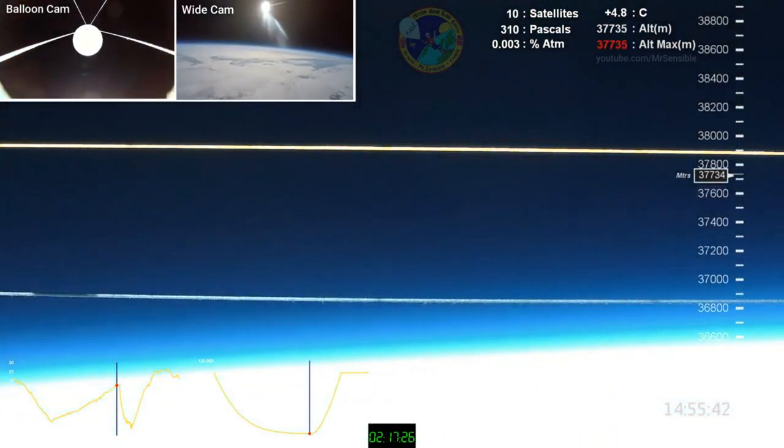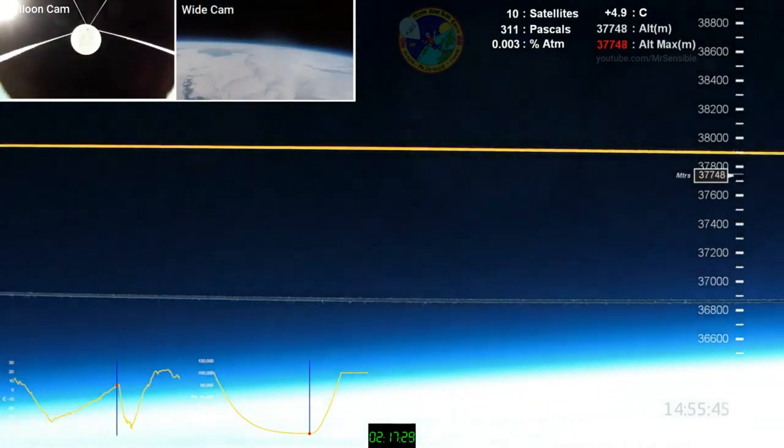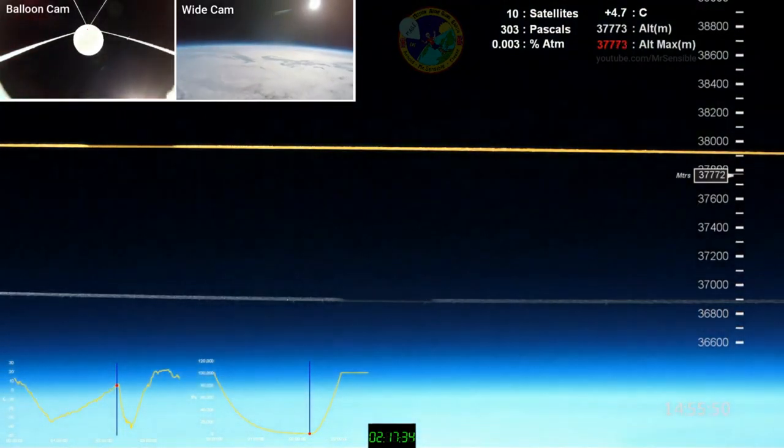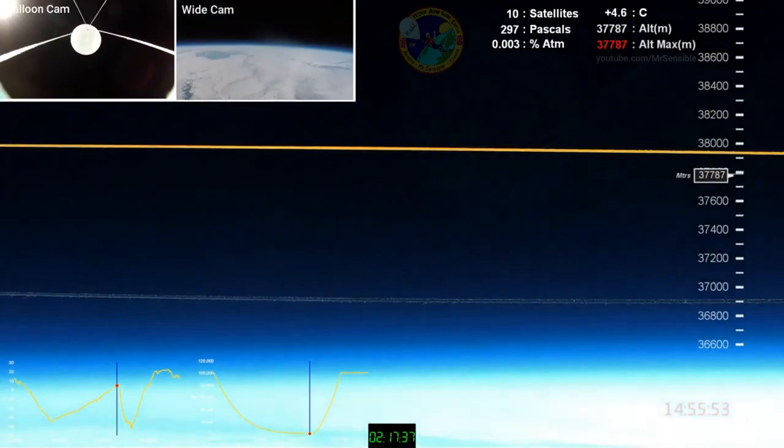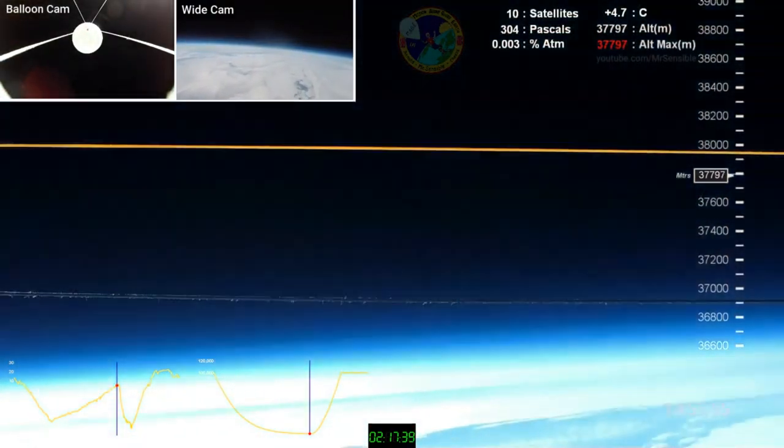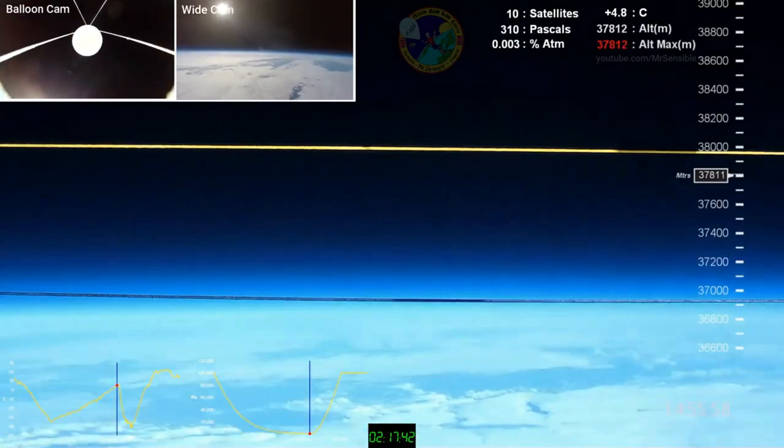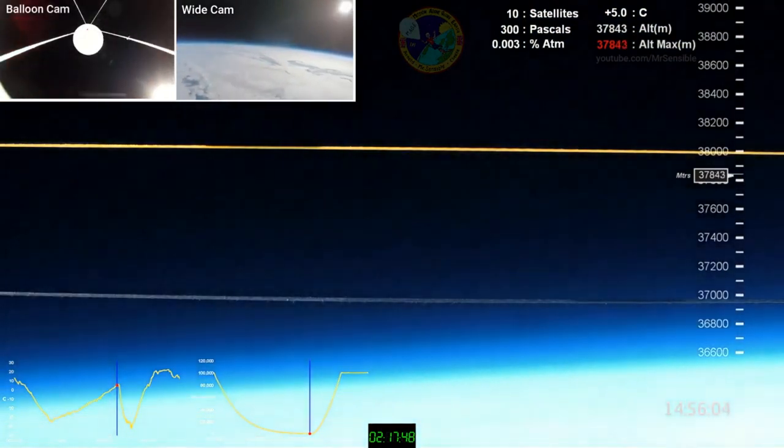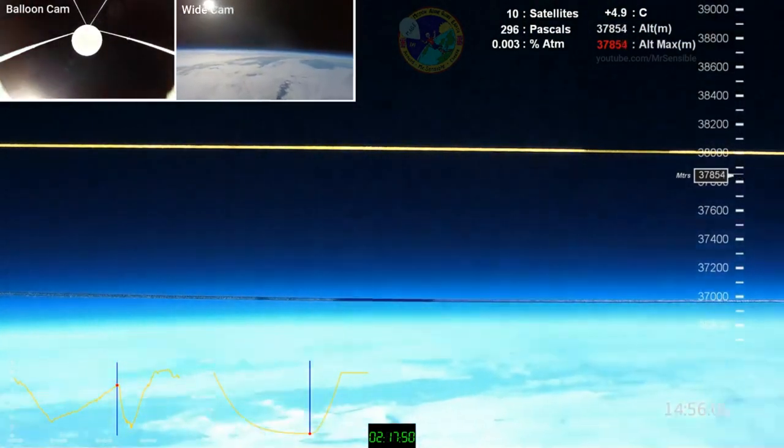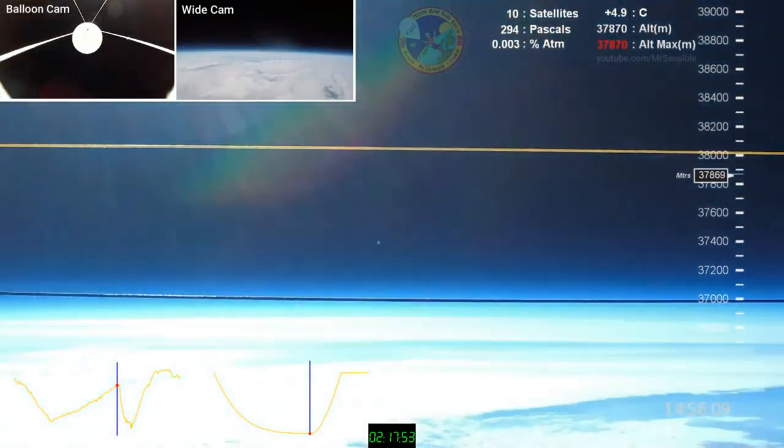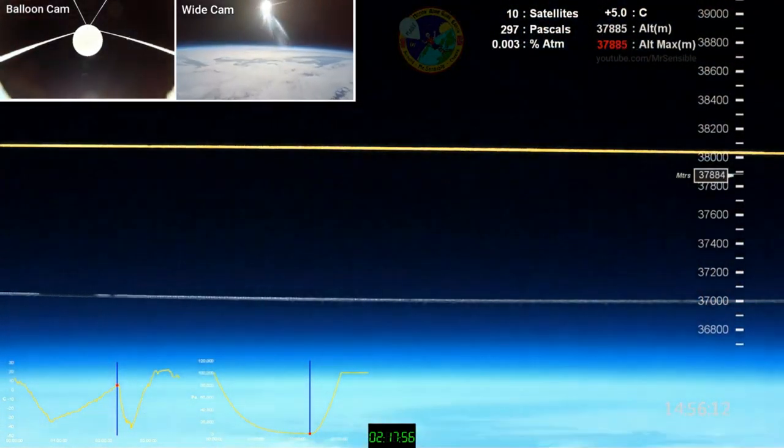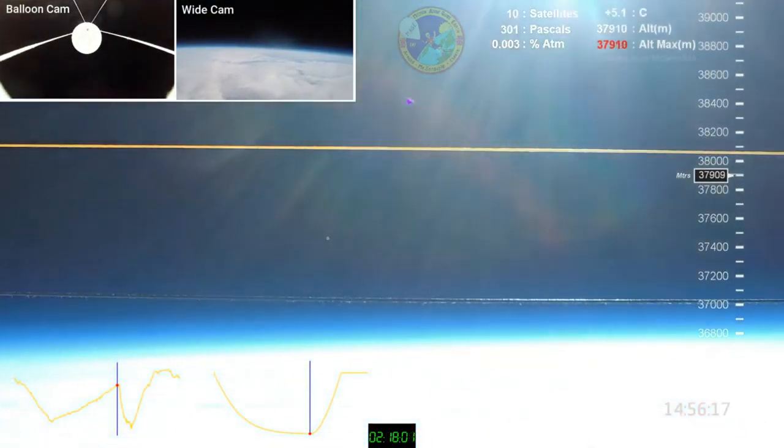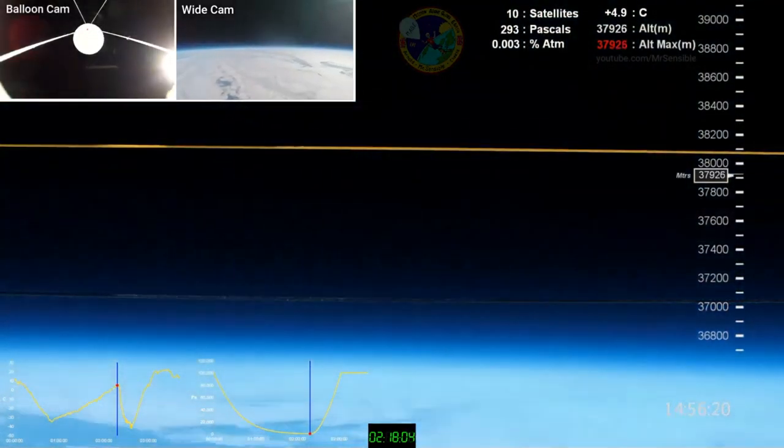I also find it a bit ironic that Mr. Sensible and his cohorts claim that he filmed the curvature of the earth when all globe propagandists believe in the magical effect of refraction that supposedly removes the curvature and giant bulges of earth and water and places mountains of curvature far behind objects that should be hidden by the bulge. If such selective wrap-around-the-curvature refraction existed, you cannot then claim to have filmed the actual edge of the ball earth because you might be looking at a mirage. But I'm not going to dwell on Mr. Sensible's clear proof of the stationary earth or the ball earth refraction paradox.